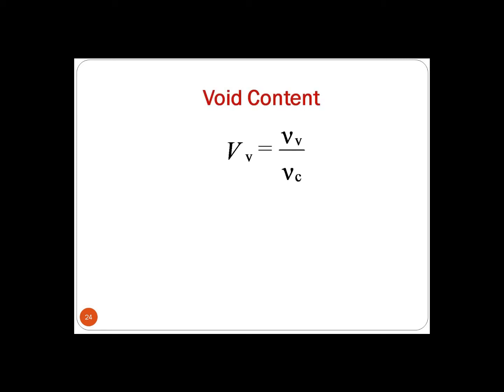We can calculate the void content from the formula: capital VV equals small VV divided by VC. Here, small VV is a certain volume of voids, capital VV is the volume fraction of voids, and this is expressed as a ratio with the overall volume of the composite VC.